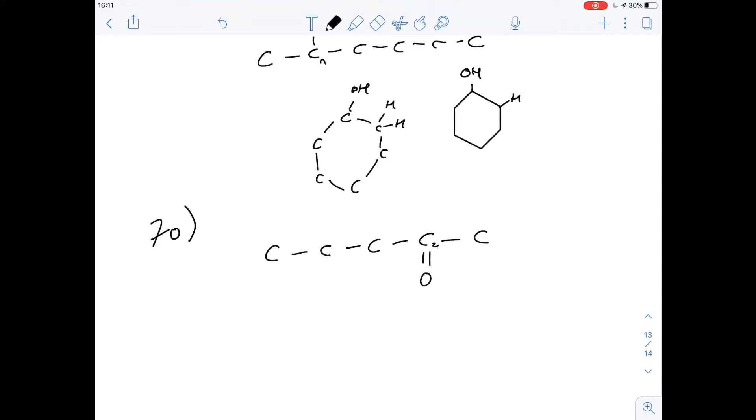This OH group then is going to be replaced by this double bonded oxygen. So what's the name of this? Well this is carbon number 2 and this is a ketone so it's going to be 2-pentanone and that gives us an answer of B.